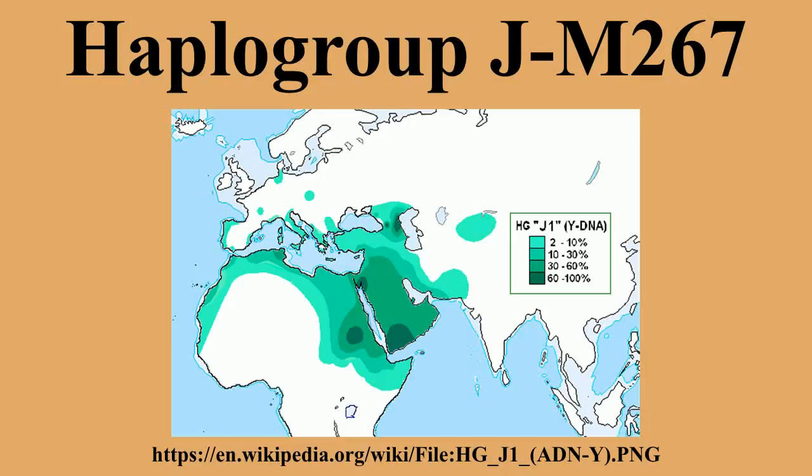Haplogroup J1 redirects here. This page discusses the Y-chromosomal haplogroup of the same name, for the completely separate and distinct mitochondrial haplogroup also named J1. Y-DNA haplogroup J M267, also commonly known as haplogroup J1, is a subclade of Y-DNA haplogroup J P209, along with its sibling clade Y-DNA haplogroup J M172. Men from this lineage share a common paternal ancestor.